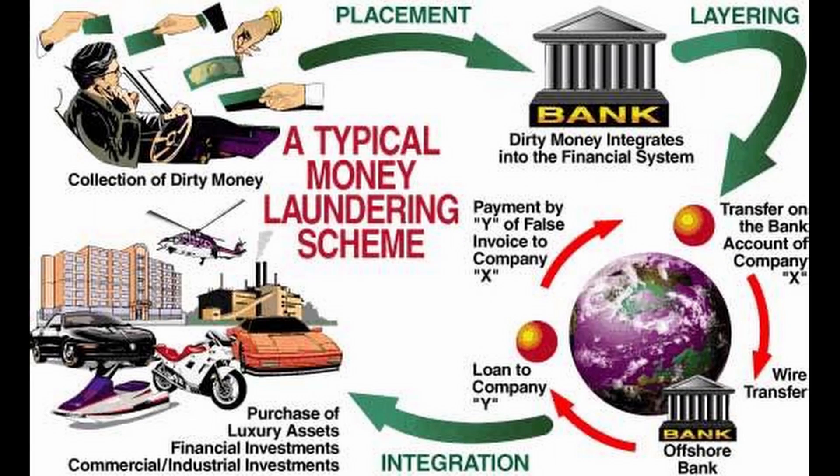Criminals complete this process by placing the dirty money into a financial system. They then put the money through many transactions to distance it as much as possible from the original crime. After that, the money appears to come from a legitimate source, and they can use it to purchase whatever they please to integrate it back into the economy.